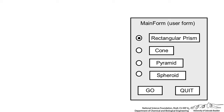I've sketched out what we want this user form to do, and we're going to have a main form. We want it to allow the user to select between four different options: the rectangular prism, the cone, pyramid, and spheroid. Then we're going to have a Go button and a Quit button if we're done doing calculations.